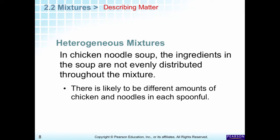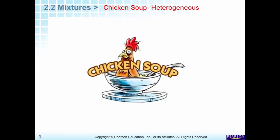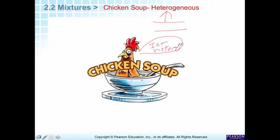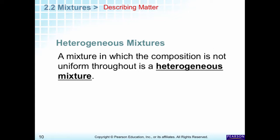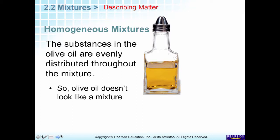In chicken noodle soup, the ingredients are not evenly distributed throughout the mixture. Each spoonful will likely have a little chicken, maybe some vegetables, maybe some noodles — but each spoonful will not be the same. So it's not homogeneous; it's heterogeneous. The key word for heterogeneous mixtures is 'not uniform.' Examples include things like chicken noodle soup.